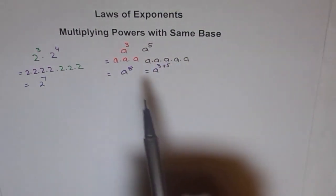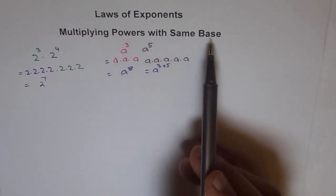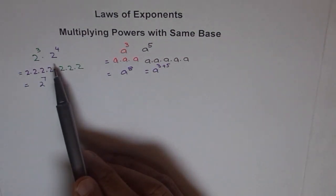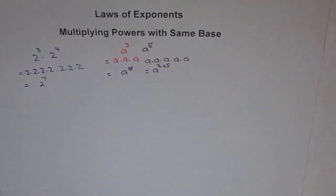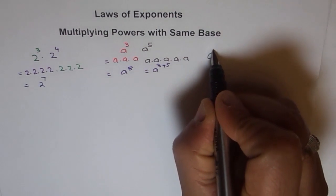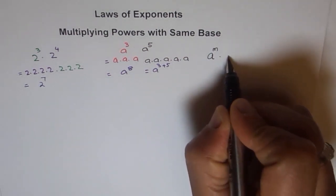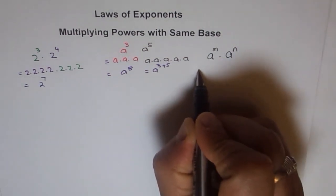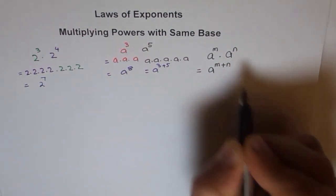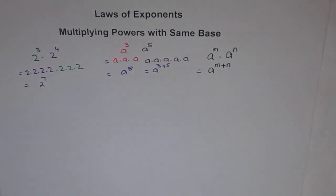In general, when multiplying powers with the same base — a and a in this case, two and two in the other — the powers get added. So our law is very simple: if we have a to the power of m, and we multiply it with a to the power of n, then we get a to the power of m plus n. That's the result.